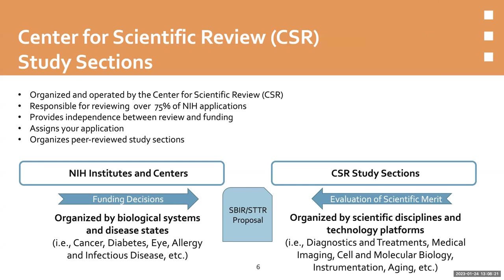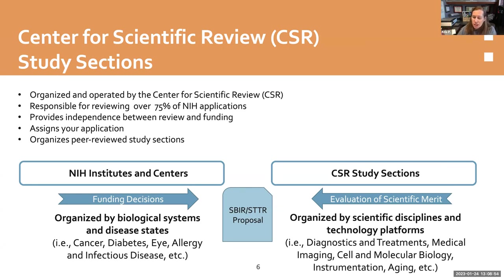CSR assigns your application to a study section as well as an institute or center, and they organize those study sections. The key difference is that institutes and centers at NIH are organized by biological systems and disease states, while CSR organizes study sections by scientific discipline and technology platforms — things like diagnostics and treatments, medical imaging, cell and molecular biology. CSR evaluates scientific merit; NIH then makes the final funding decision based on that review.